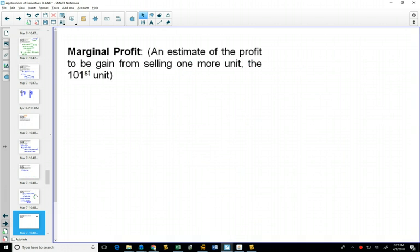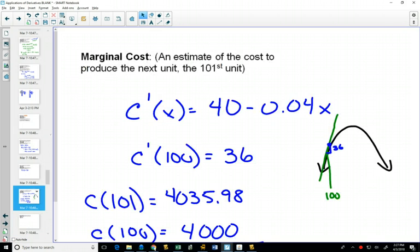And then, finally, our marginal profit. It's 100 because, again, if you think about plugging it into 100, whatever slope that I get from that is like going rise over run. So the fact that I get 36, I can think of that as 36 over 1.